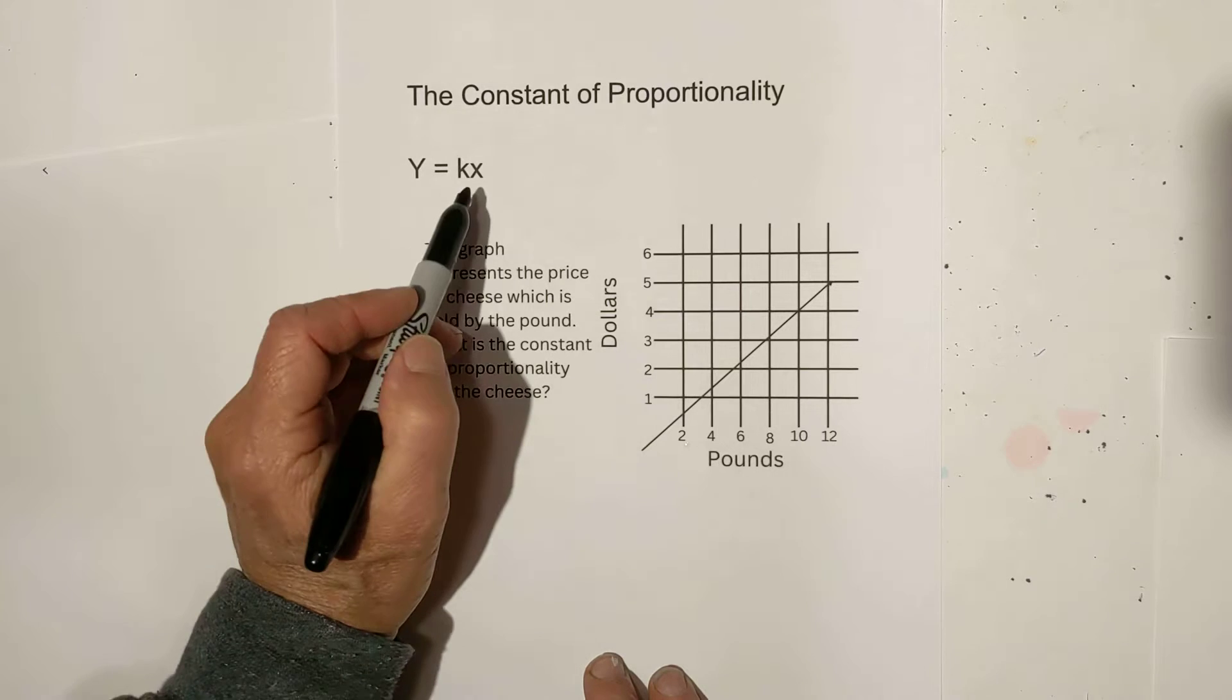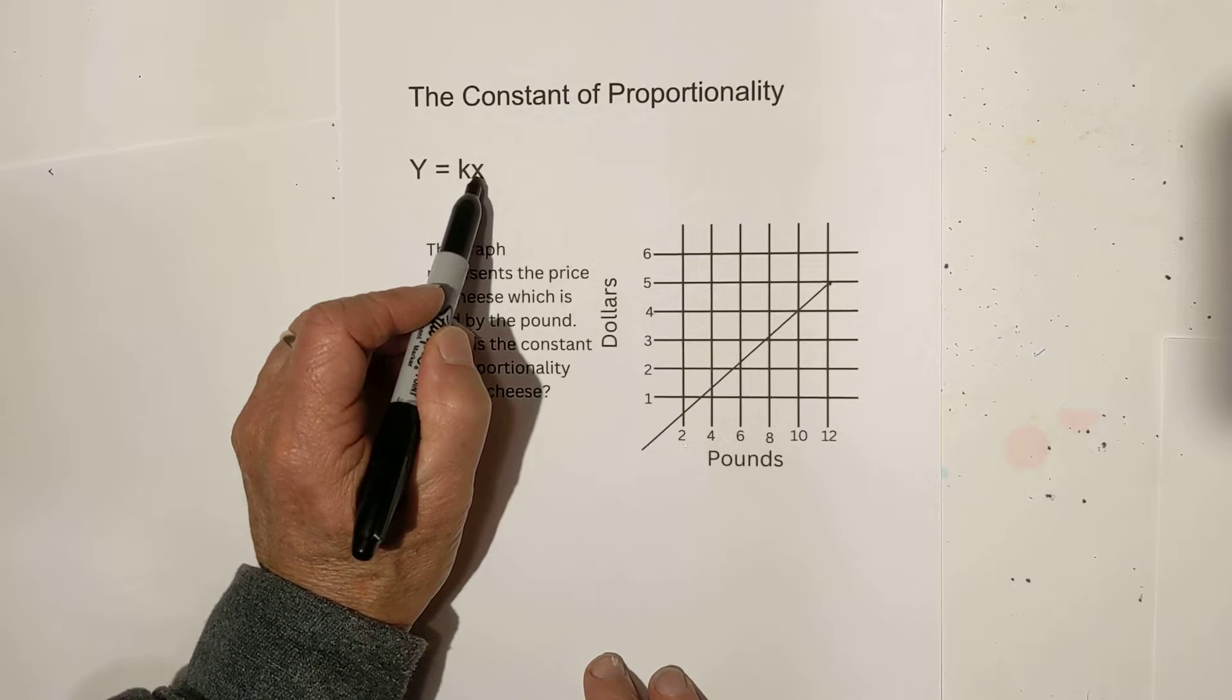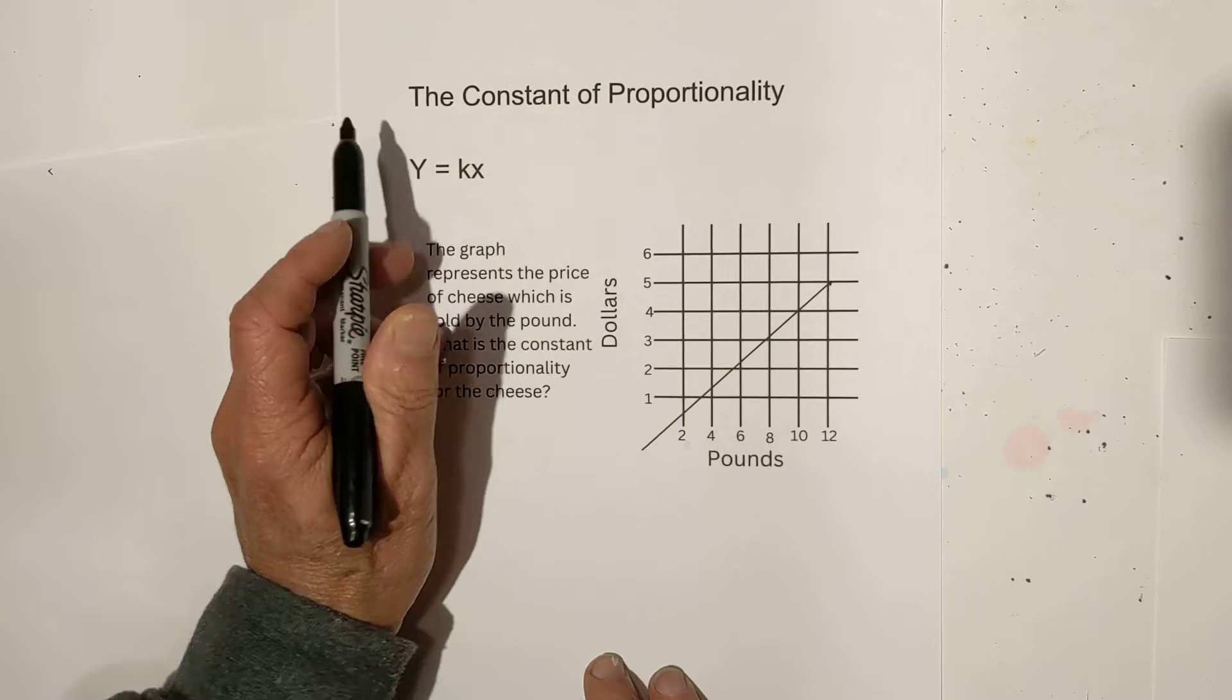And what does that mean? Basically, first it's represented by k, and it's what can you multiply x by in order to get y.